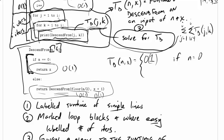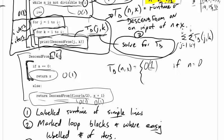So there's these constant time operations and then there's a call on descend from. Well how do we express this call on descend from? Look back up here, T_D of n comma x, that's a little off the screen, let's bring it down a bit. T_D of n comma x is the runtime of descend from on an input of n and x.